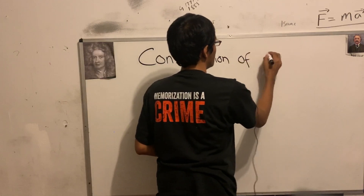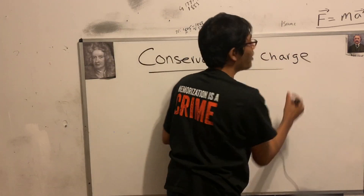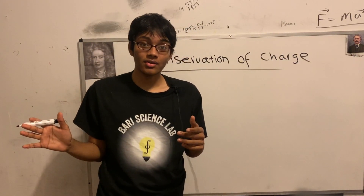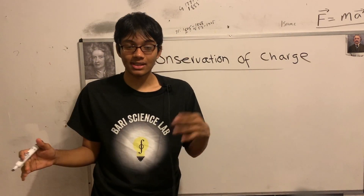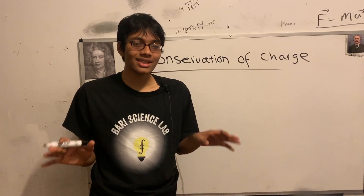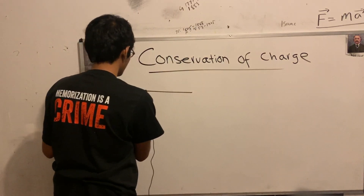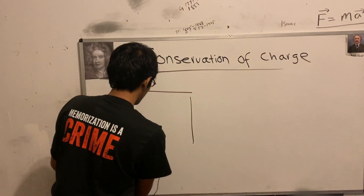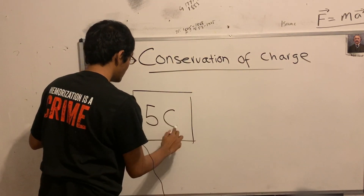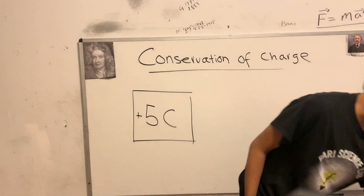Conservation of charge. Let me give you an example. Let's say we have a box of charges. I don't know how many charges are in this box — how many protons, electrons, cations or anions. All I know is that the box has a net charge of 5 coulombs.